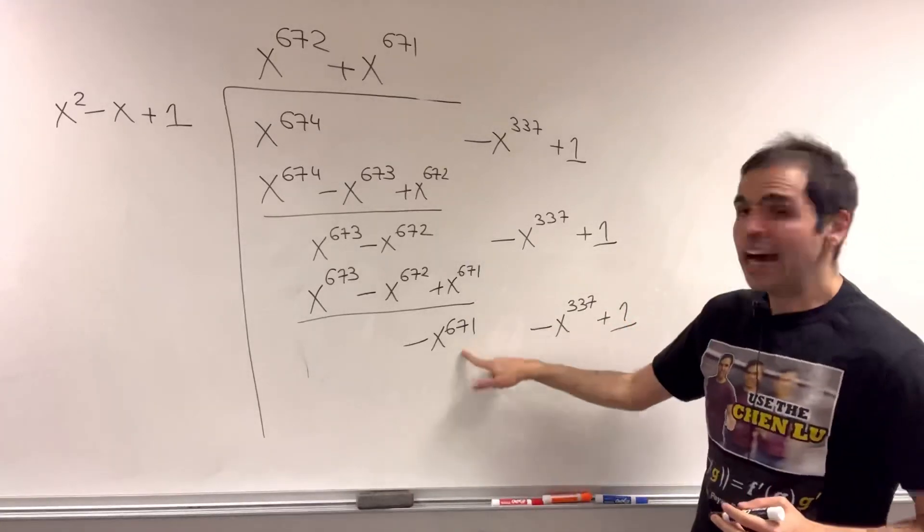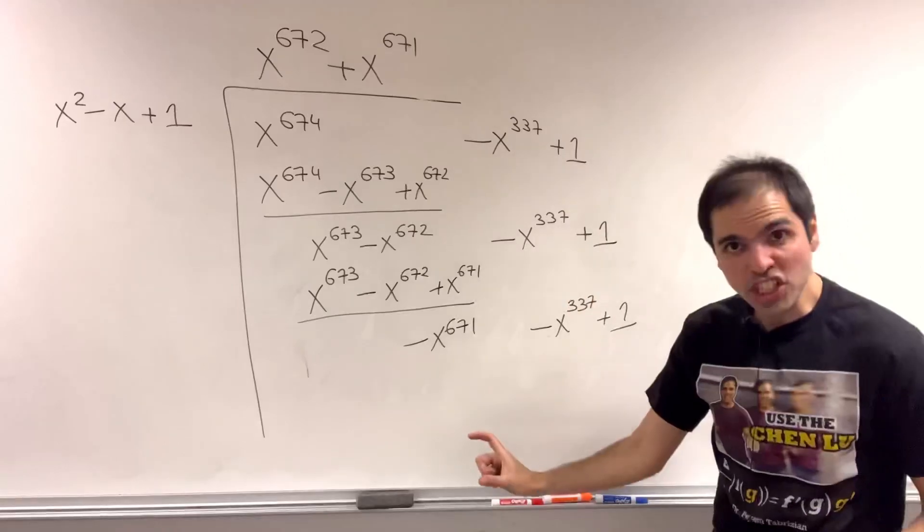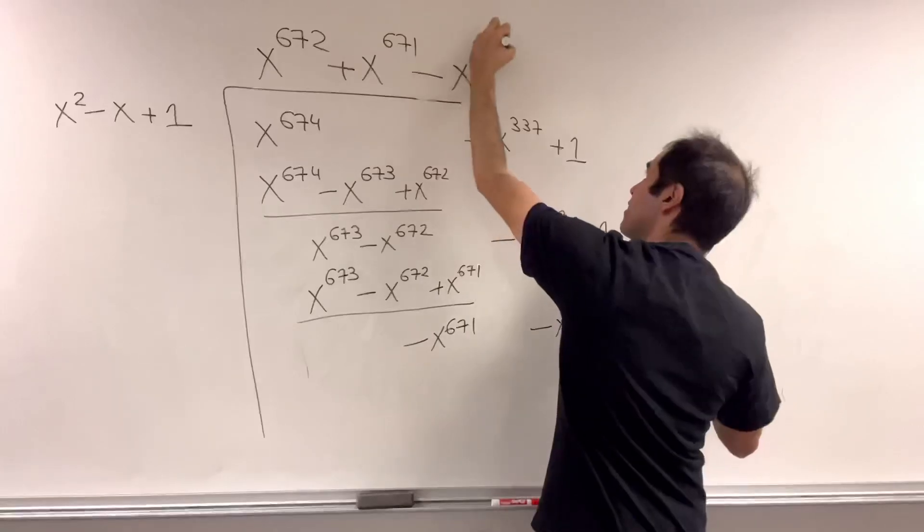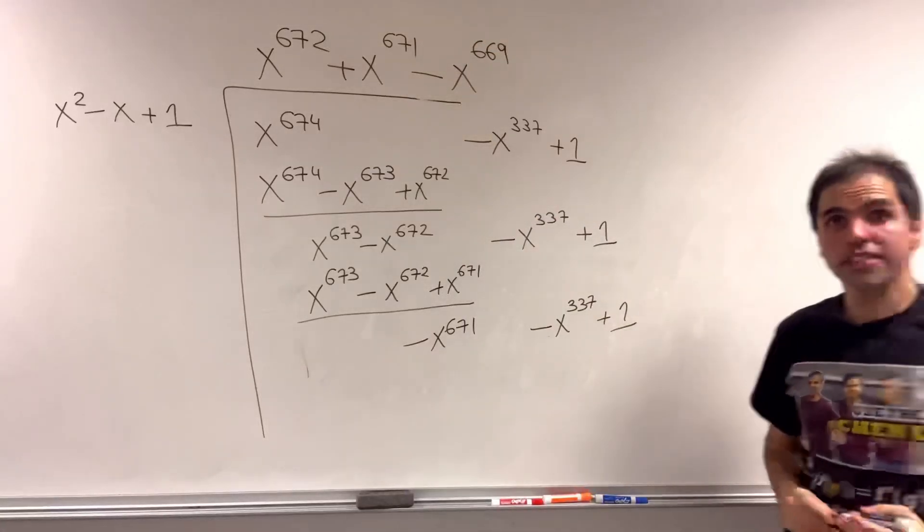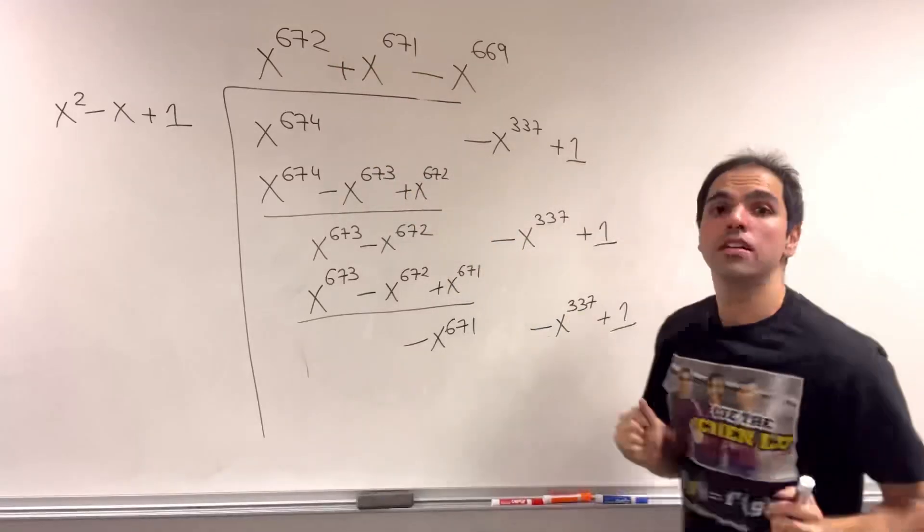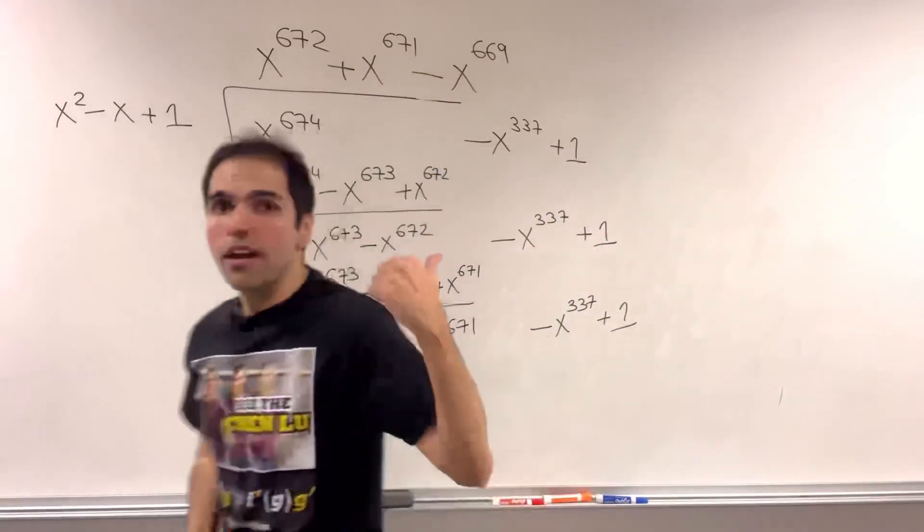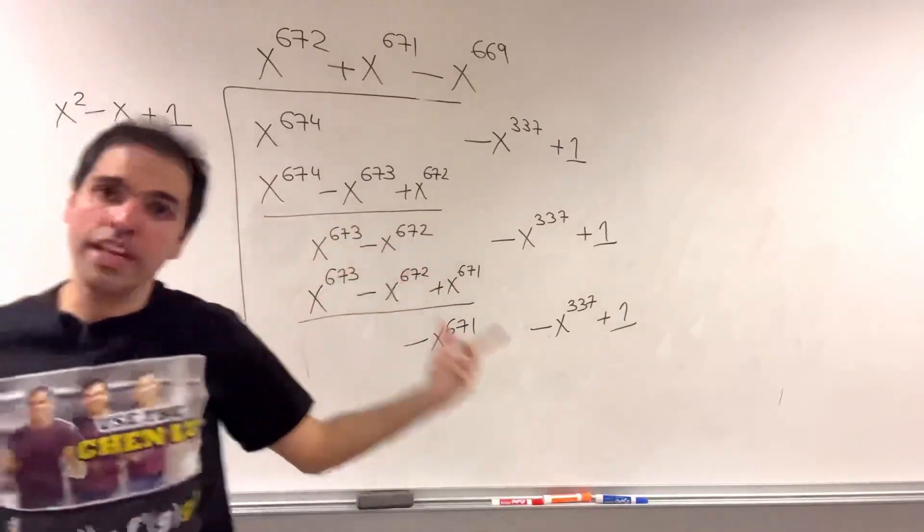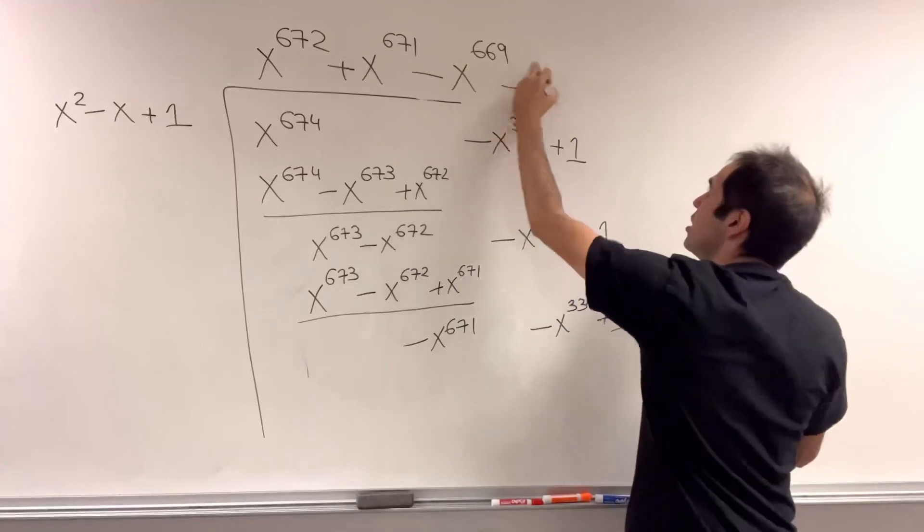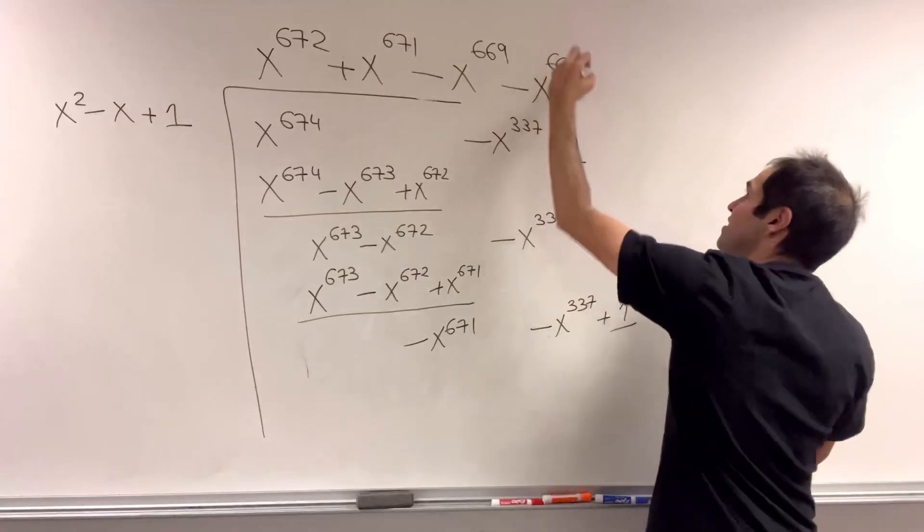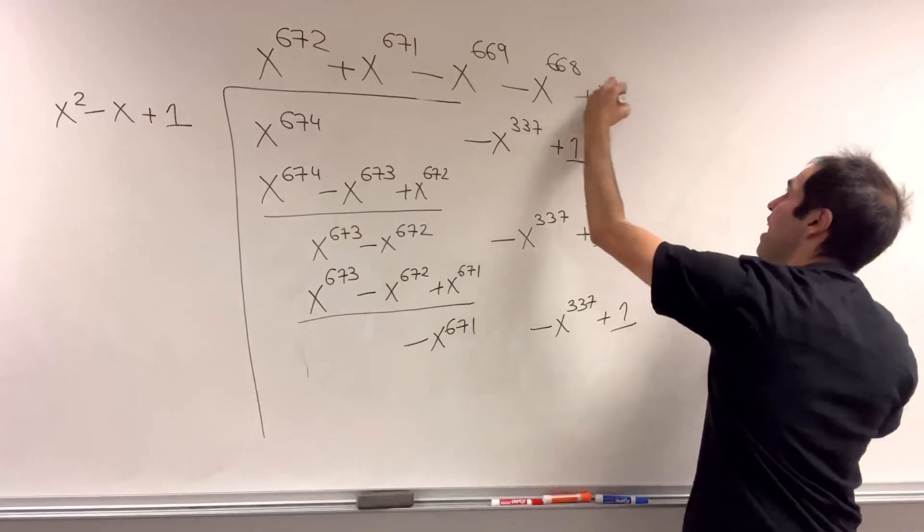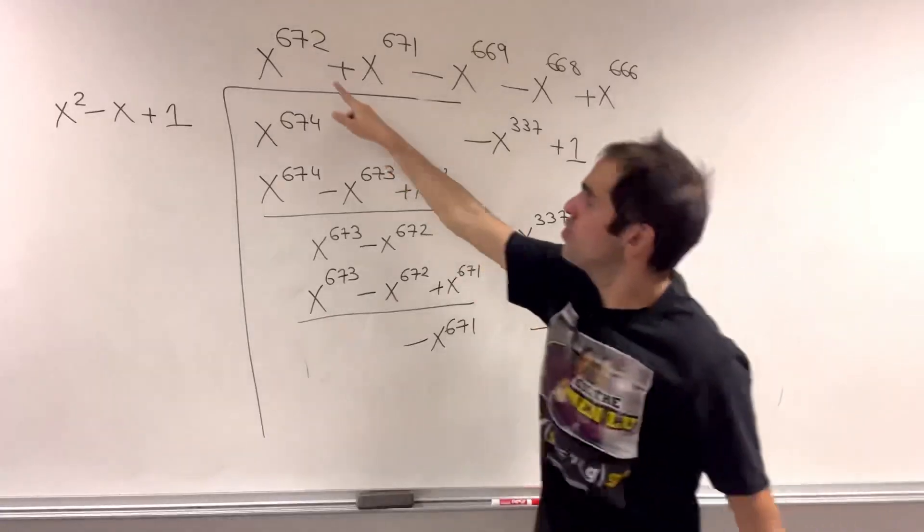So what happens here now is that we have a jump, and we switch signs. So the next term will be x to the 669. So you see, 672, 671, 669. So we have this jump. But then, if you continue, I will not show you the whole thing, well, the next term is as expected, minus x to the 668, but then again, you jump, and you get x to the 666.